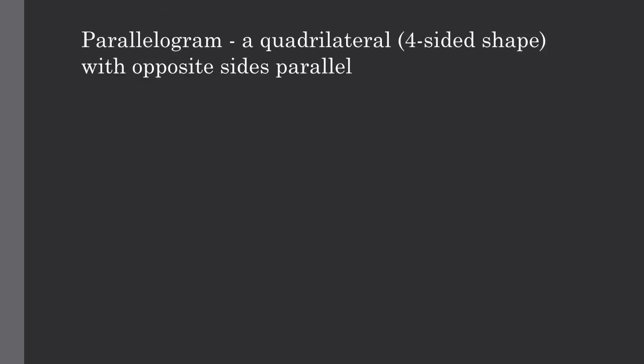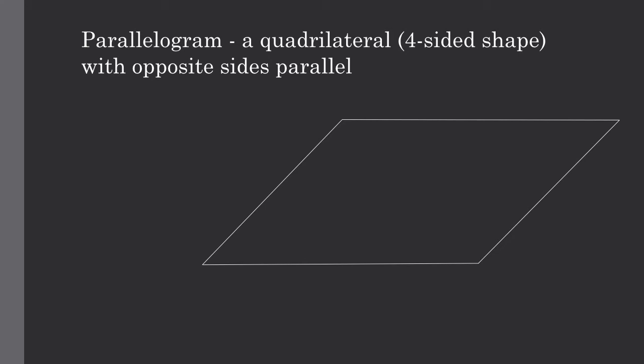The next thing we are going to talk about is what a parallelogram is. The definition of a parallelogram is a quadrilateral, or four-sided shape, with opposite sides being parallel. An extension on this definition is a theorem that on a parallelogram, opposite sides will be equal as well as opposite angles.